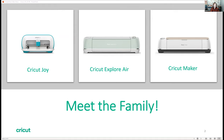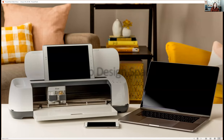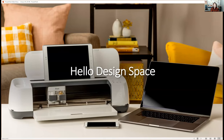All of our machines work with something called Design Space. If you'd like to learn more about the machines, you can check out learn.cricut.com. Design Space works with all three different types of machines — the Cricut Joy, an Explore, or a Maker. It also works across multiple platforms, so you can use Design Space on a desktop or a laptop, a tablet device, or a phone device.